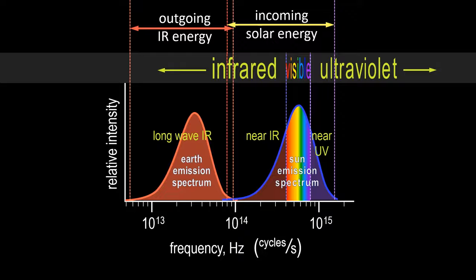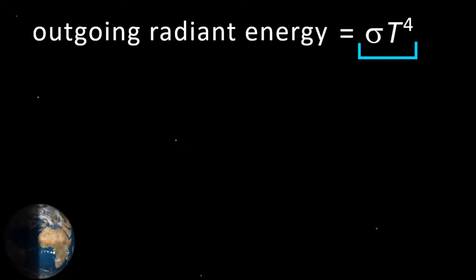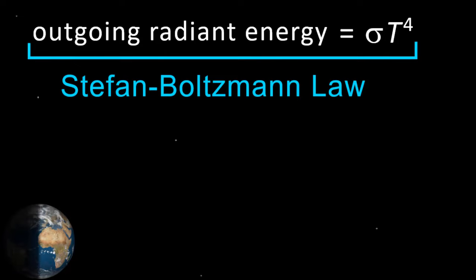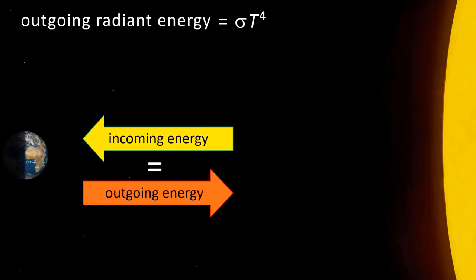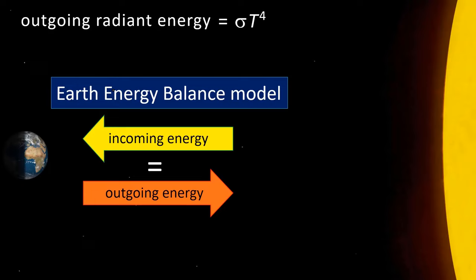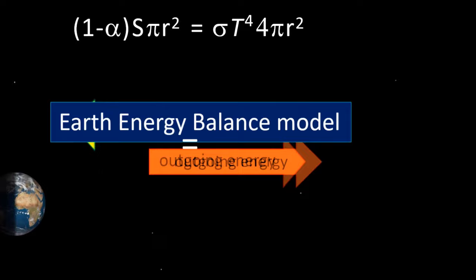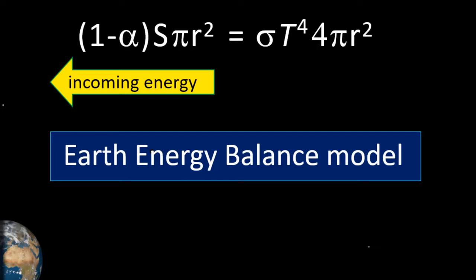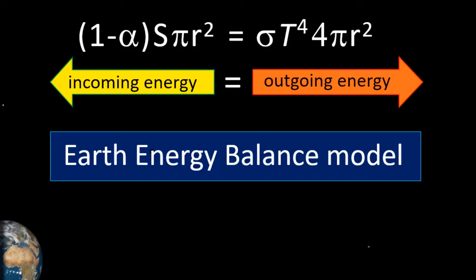We can express the outgoing radiant energy from the Earth as proportional to its absolute temperature to the fourth power — this relationship is the Stefan-Boltzmann law. Thermodynamics tells us that incoming and outgoing energy should reach an equilibrium, often called the Earth-Energy Balance Model, which ultimately explains global warming. We can apply the Stefan-Boltzmann law to this model because we can determine the amount of incoming energy from the Sun, which the model tells us will equal the amount of energy emitted by the Earth. This relationship helps us determine the Earth's temperature.